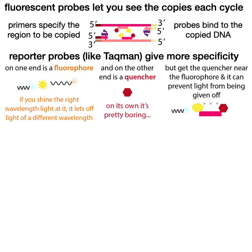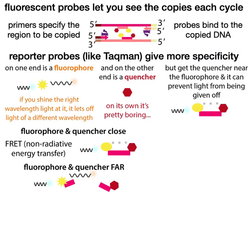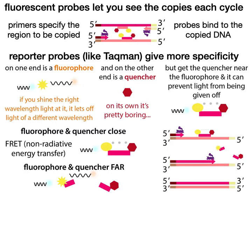More specific probes came along, like reporter probes such as TaqMan. These probes use something called FRET. At one end of the probe is a molecule called a fluorophore — that's what gives off the light — and at the other end is a quencher. If the fluorophore and quencher are close, the quencher steals the light that would have been given off. If they are far apart, that light is given off. When these probes are cleaved, the fluorophore and quencher come apart and you see fluorescence. In qPCR, when the DNA polymerase — the DNA copier — comes into contact with one of these probes, it chews it apart, freeing the fluorophore from the quencher so you see fluorescence.